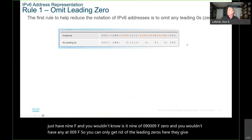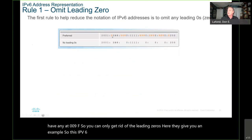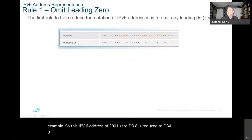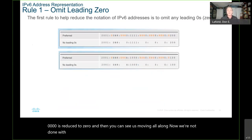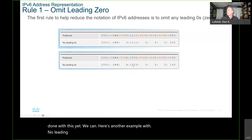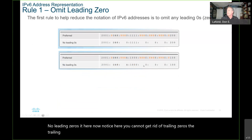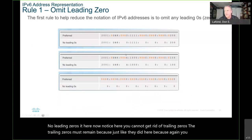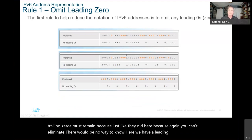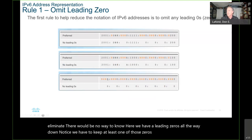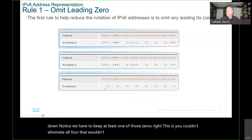Here's an example: the IPv6 address 2001:0db8 is reduced by eliminating leading zeros. Notice that trailing zeros must remain because otherwise there would be no way to know the value. If you have all leading zeros in a group, you have to keep at least one of those zeros — you can't eliminate all four. But groups of all zeros can be handled by our second rule.